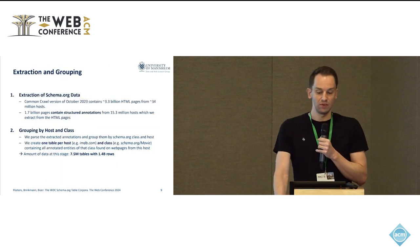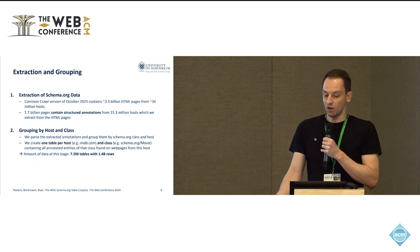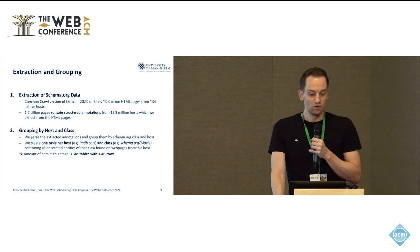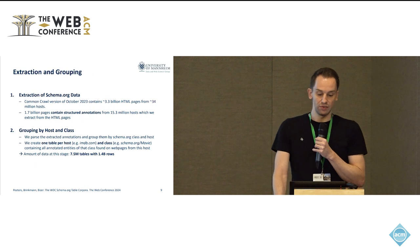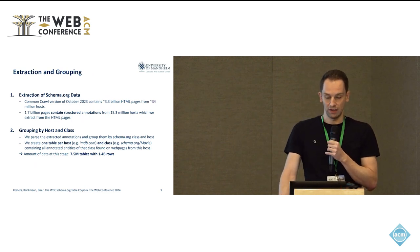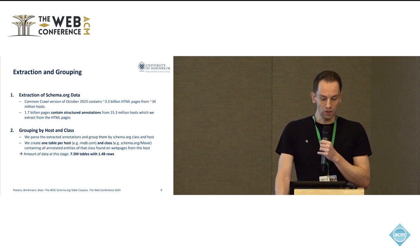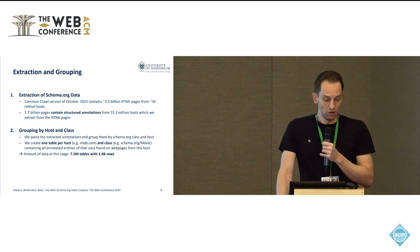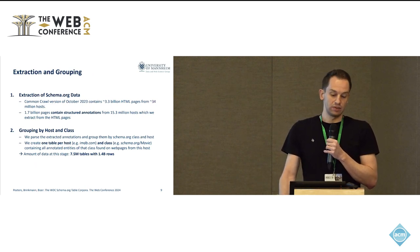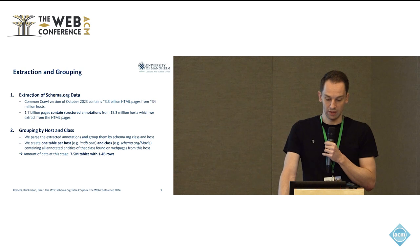In the first step we extract the schema.org data. In this Common Crawl version from October 2023, we find over 1.7 billion pages that actually contain these structured annotations from 15.3 million hosts, and then we extract them from these HTML pages. In the second step we group them by host and class, creating one table per host — for example the host imdb.com with entity class schema.org Movie — so that table contains all the movies marked up on web pages of imdb.com.